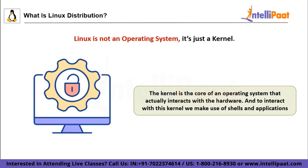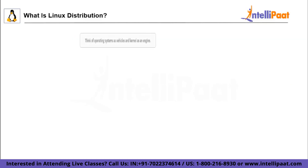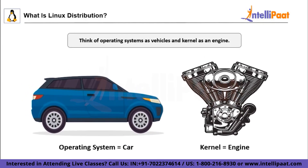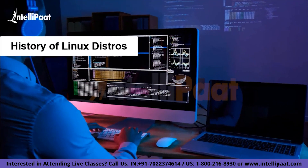Now, you must have come across the statement that Linux is not an operating system — it's just a kernel. And well, that's not wrong. The kernel is the core of an operating system that actually interacts with the hardware. And to interact with the kernel, we make use of shells and applications. Think of the operating system as a vehicle and the kernel as an engine — you cannot drive an engine directly. Similarly, you cannot use the kernel directly. The concept of Linux distribution can be visualized as a vehicle manufacturer like Toyota or Ford that provides ready-to-use cars, just like Ubuntu or Fedora distributions provide a ready-to-use operating system based on the Linux kernel.